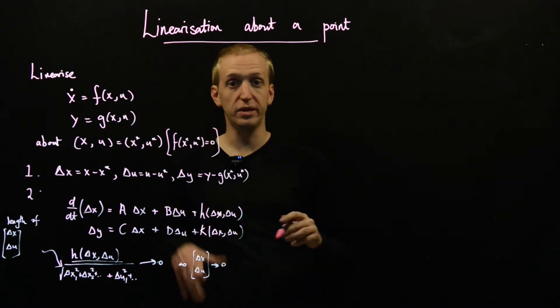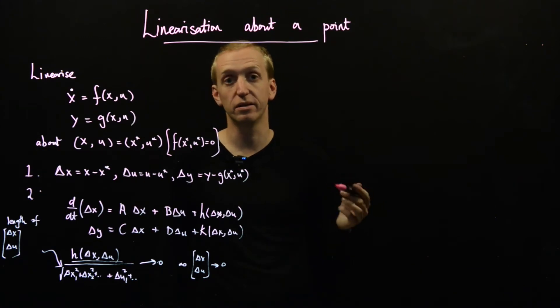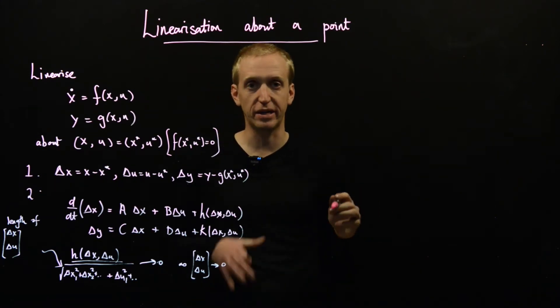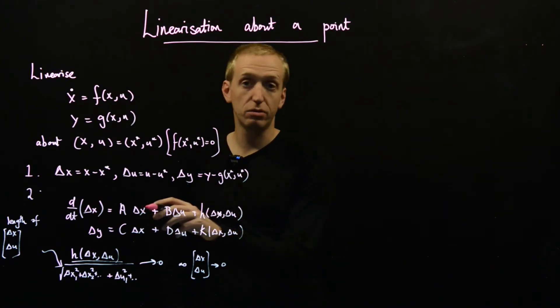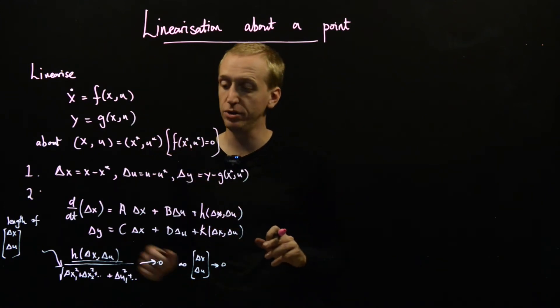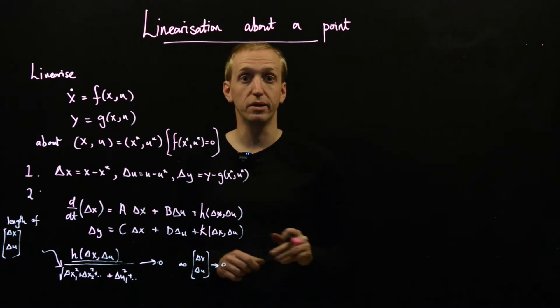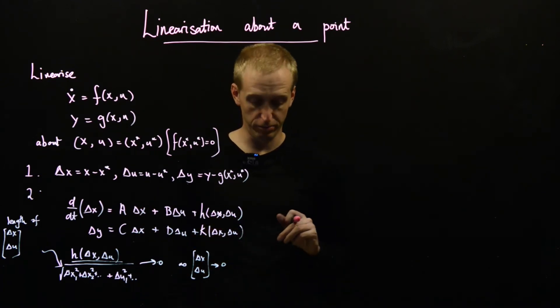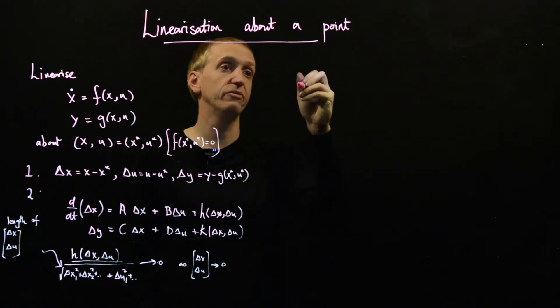So this is our target. This is our linearized form. And to do this, we just repeat the method that we used for the phase plane case again. So that gives us two options. We either just substitute in directly and mess around with the equations until we get it in the required form, or we use the Jacobian evaluated at the equilibrium point. And so let's just quickly see this in terms of the example.